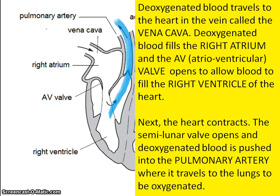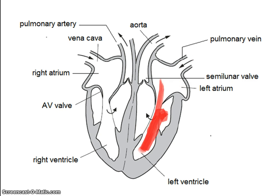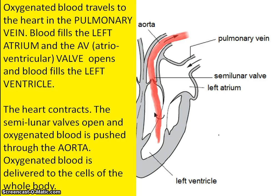Once oxygenated, the blood returns to the heart via the pulmonary vein. Now oxygenated, it fills the left atrium. The AV valve opens and blood fills up the left ventricle. Then the heart contracts and blood is pushed through the aorta under very high pressure, with the semilunar valves opening for that to happen. The oxygenated blood is delivered to every cell of the whole body.